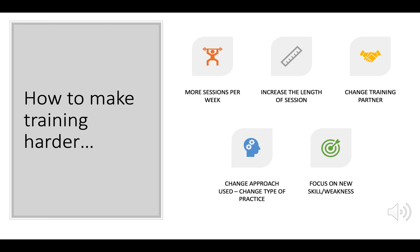Now we're going to look at what changes we can make if we are seeing progress within your PDP. Performers may choose to use more sessions per week — for example, moving from training twice or three times a week to three or four sessions per week to continue improving their fitness.